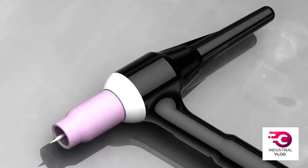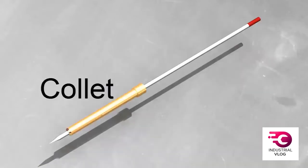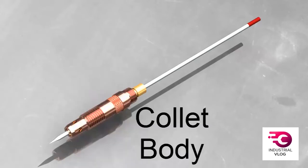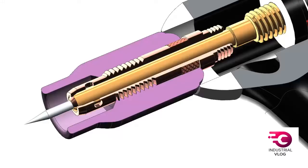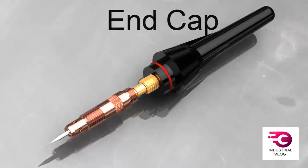Here's the tungsten electrode being held in a TIG torch. The electrode slips into a collet and the collet tightens up against the collet body. You can adjust the length that the electrode sticks out of the holder by loosening up the end cap. When you tighten the end cap, the collet clamps down on the electrode.